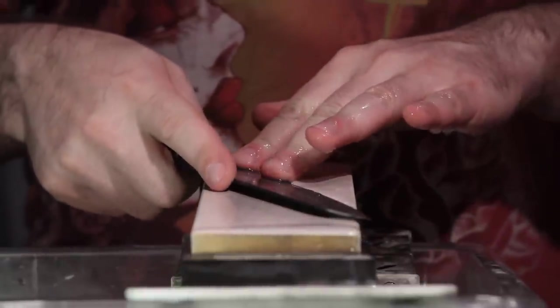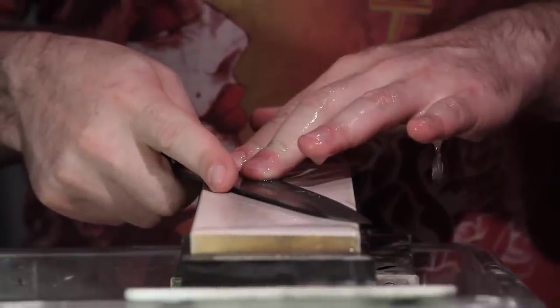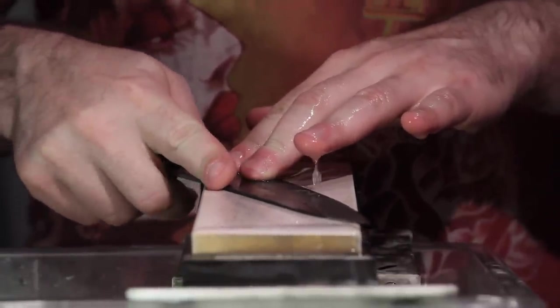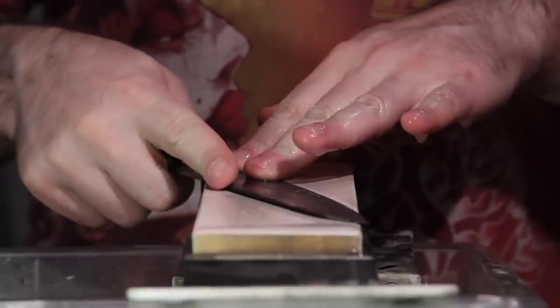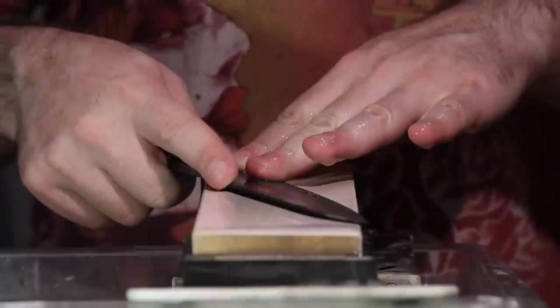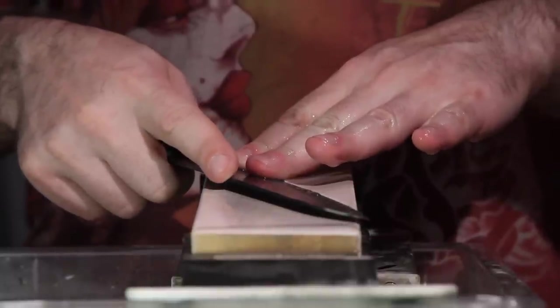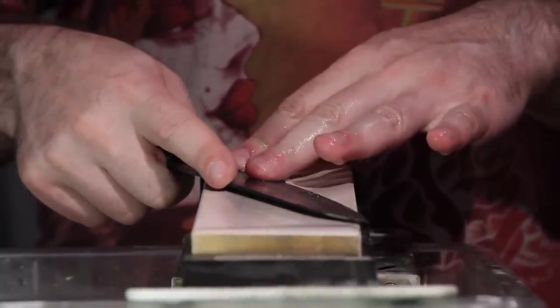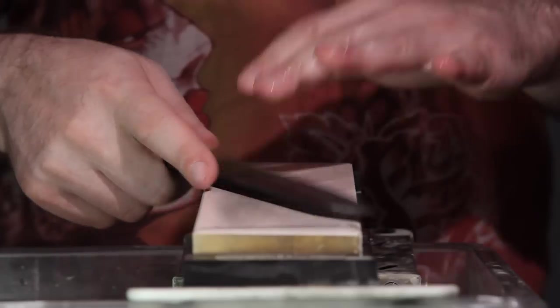So for our sharpening, our angle is up here. For our thinning, our angle is going to be way down here. My blade's not flat on the stone, there's still a little bit of room there, but it's a much lower angle. If your thinning angle is here, or here, or anywhere in here, you're okay. If it's the same angle as you're sharpening it, that's not really thinning, that's just sharpening. So it has to be more acute than what you're sharpening it.